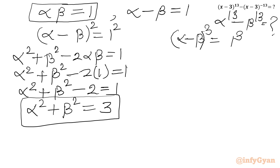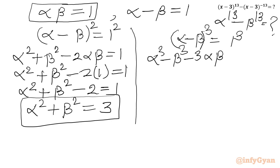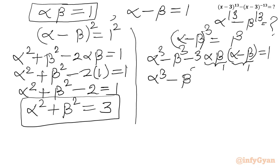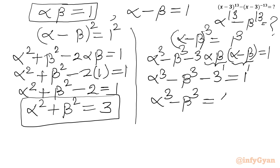Now applying the (a-b)³ formula to α - β = 1: α³ - β³ - 3αβ(α - β) = 1. Since αβ = 1 and α - β = 1, we get α³ - β³ - 3 = 1, so α³ - β³ = 4. This is equation 2.